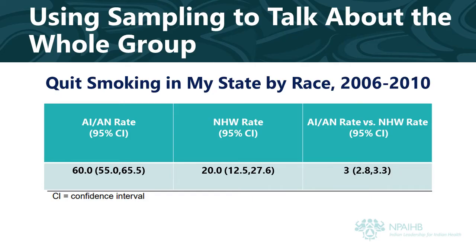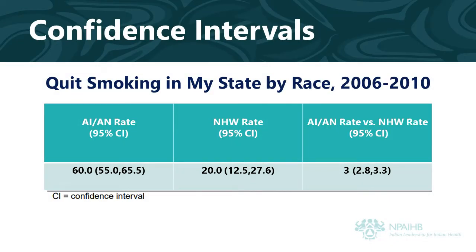For instance, in this table about rates of those who quit smoking in my state from 2006 through 2010, the data they used to determine the rates was based on a sample. You can use confidence intervals to decide how confident you are that the data represents what is true. For example, if you look at the AIAN rate of 60%, it has two numbers in parentheses to the right of this rate. These two numbers in parentheses separated by a comma is called the confidence interval.